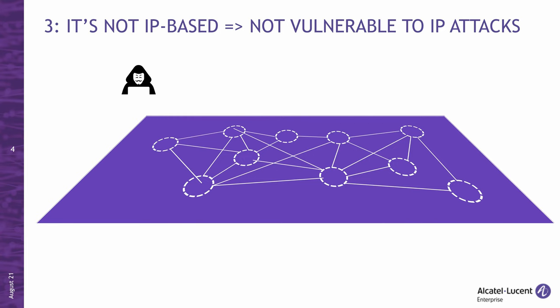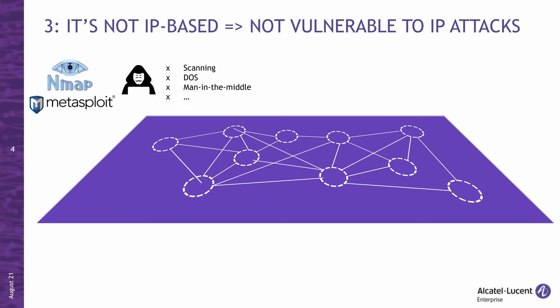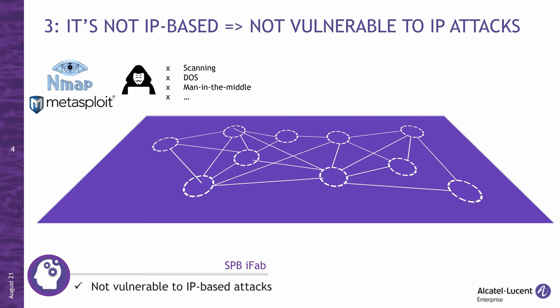Let's imagine a hacker wanted to cause trouble. The first step in hacking is reconnaissance, then network discovery and scanning. Typical hacking tools include Nmap and Metasploit, but these tools and 99% of all hacking techniques rely on IP communication, which makes them effectively useless when the nodes do not even use the IP protocol. Bottom line: by not using IP, the network is not vulnerable to IP-based attacks.